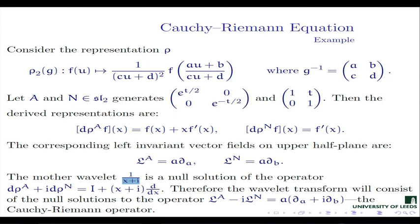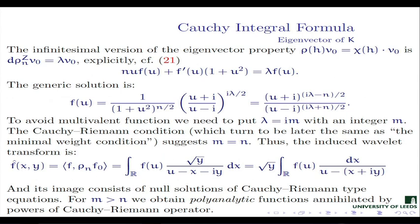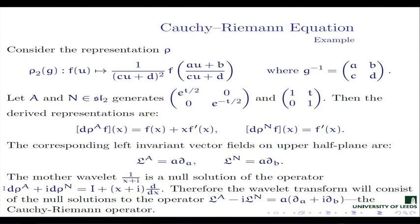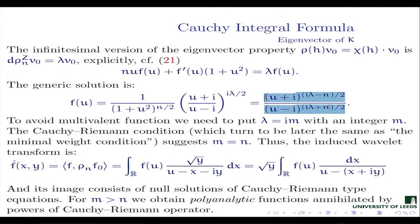When you impose that condition and reduce accordingly, you get the function seen on the previous slide: 1/(x+i). This is the mother wavelet which has both properties — it is an eigenfunction for subgroup K and it is annihilated by some operator. The wavelet transform is done according to the formula, giving the Cauchy integral formula. It is also possible to use other parameters m greater than n, but this time the mother wavelet will be annihilated not by this operator but by some power of this operator.